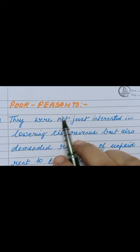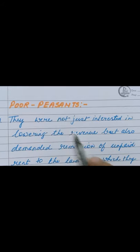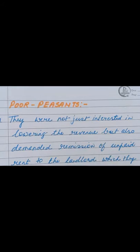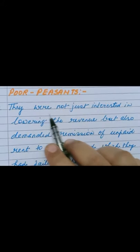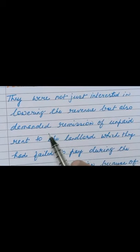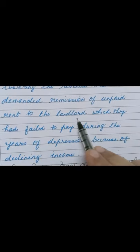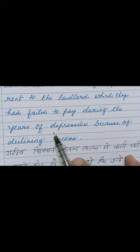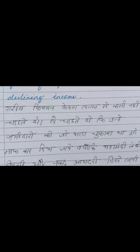The poor peasants joined the Civil Disobedience Movement because they had their own set of problems. They were not just interested in lowering the revenue, but also demanded remission of unpaid rent to the landlord, which they had failed to pay during the years of depression because of declining income.